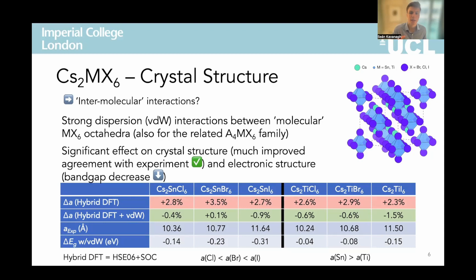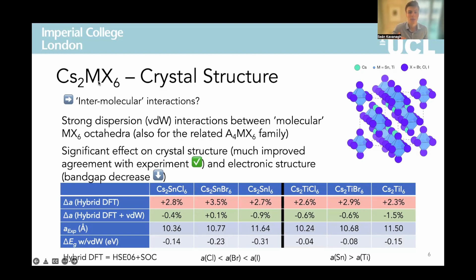Moreover, this lattice contraction has a significant effect on the electronic structure, tending to reduce the band gap energies, and so these results demonstrate the necessity to account for these interactions in theoretical models of this and related zero-dimensional compounds. Some trends to note are that, as expected, the lattice constant increases as we move down the halogen periodic group from chlorine to bromine to iodine, and is smaller for the titanium compounds due to the smaller ionic radius compared to tin.